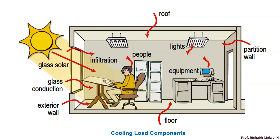Greetings and welcome to this lecture on refrigeration and air conditioning. We will continue with the numerical related to air conditioning system design. A diagram has been shown which we have already seen. It is very important. For example, an office room is shown, and this diagram indicates the different cooling load components. Different types of heat entering the room need to be removed by the air conditioning system. The sensible heat part is called room sensible heat, and the latent heat part is called room latent heat.